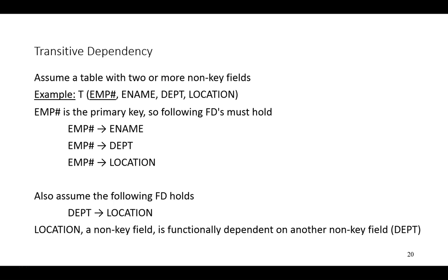Another possible problem that can occur is what's called a transitive dependency. Assume a table with employee number, employee name, department, and location. Employee number functionally determines all of the remaining attributes, making it a candidate key and subsequently the primary key. Also assume another functional dependency: if you tell me the department number or the department name, I can tell you the location of the department. Therefore, location is a non-key field, department is a non-key field, and we have a non-key field that functionally determines another non-key field — this is referred to as a transitive dependency.